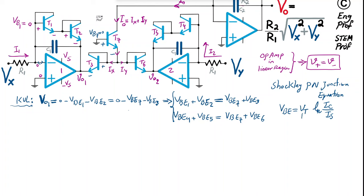VT = kT/Q, where k is Boltzmann's constant, Q is the electron charge, and T is the junction temperature. At approximately 290 K (17–20°C), VT ≈ 25 mV.